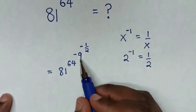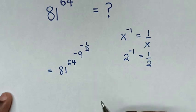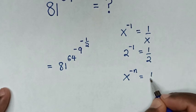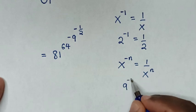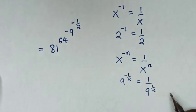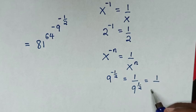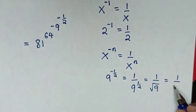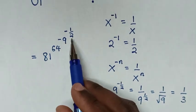In the next step, we will deal with 9 power of negative a half, leaving the negative behind. So 9 power of negative a half is in the form of x power of negative n, which equals 1 over x power of n. So 9 power of negative a half equals 1 over 9 power of a half, which is the same as 1 over the square root of 9, which is 1 over 3.